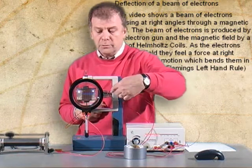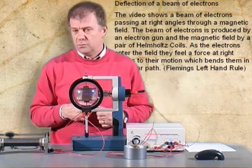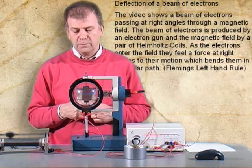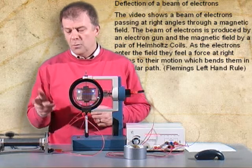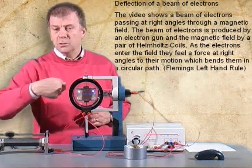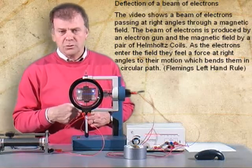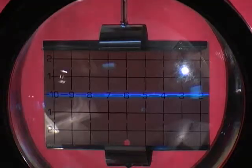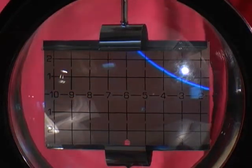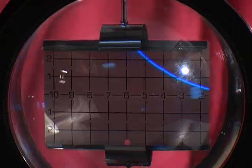The electron gun is producing a stream of electrons, each of charge 1.6 times 10 to the minus 19 Coulombs. And when I pass a current through these coils it will produce a magnetic field at right angles to the direction of the electrons. And you'll notice that the electrons are deflected in a circle.